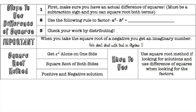You can only use difference of squares when you actually have a difference. Difference, when we're talking about adding or subtracting, would mean subtracting. So there must be a subtraction sign, and you must also be able to take the square root of whatever is being subtracted. If you can't do those two things, you're not going to want to use the difference of squares method.